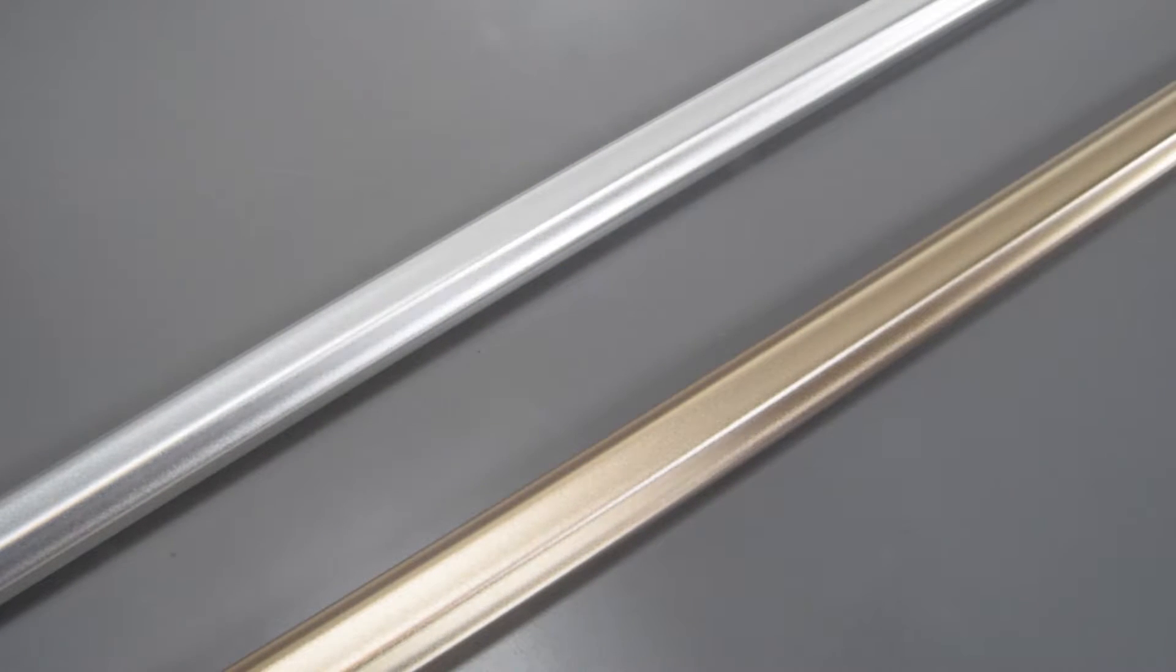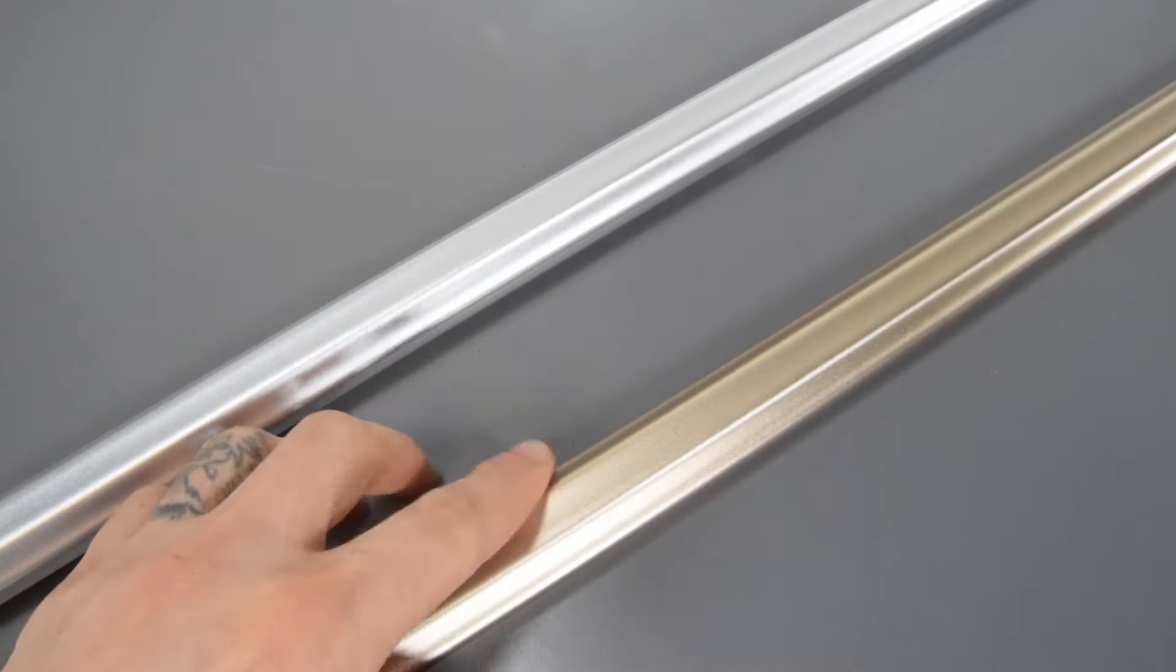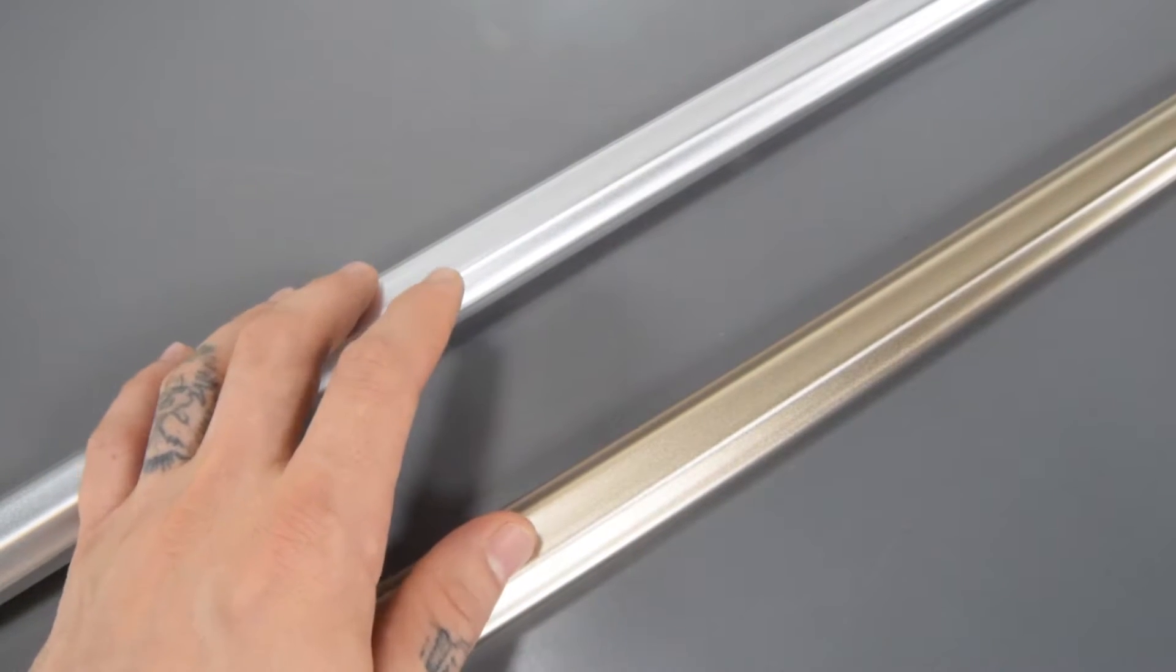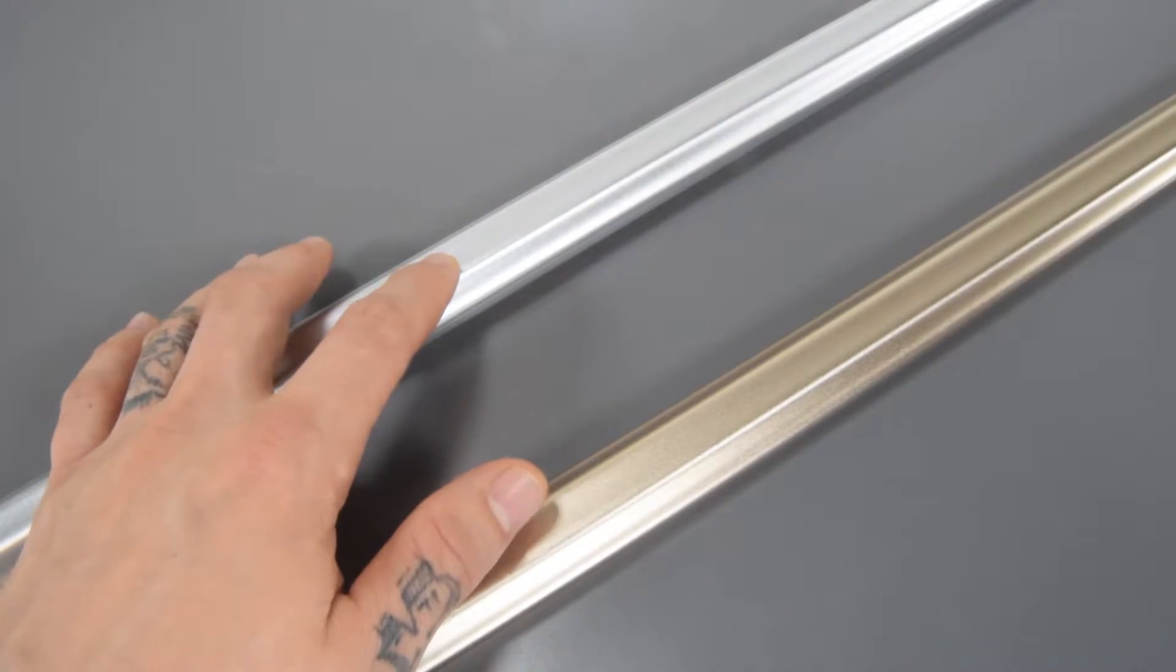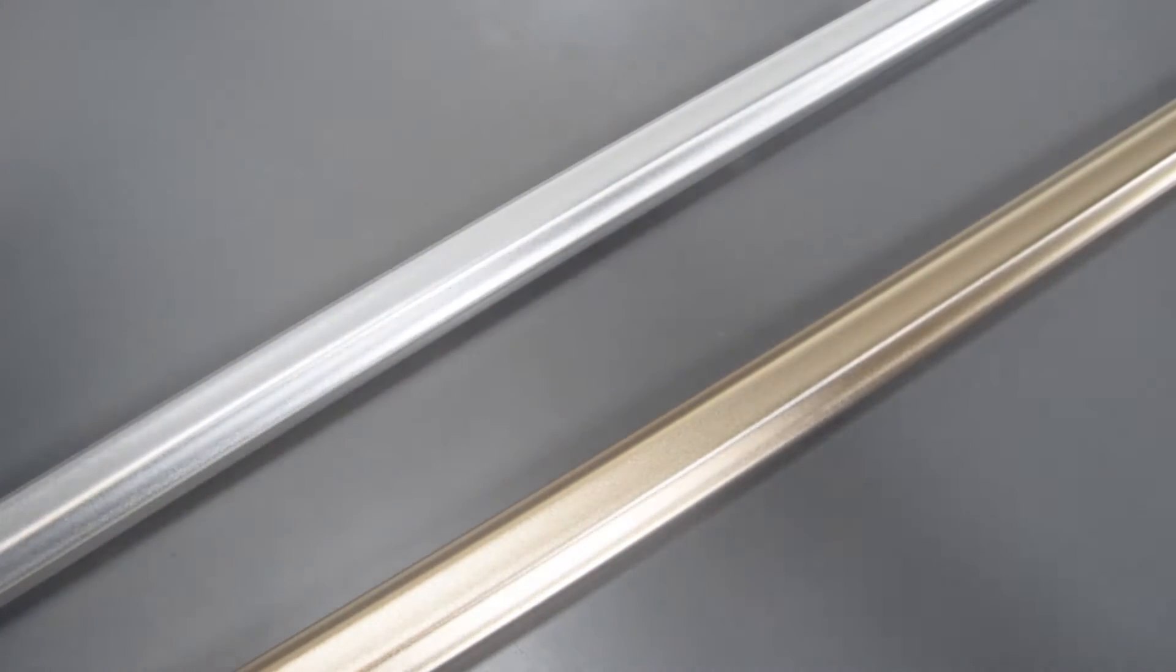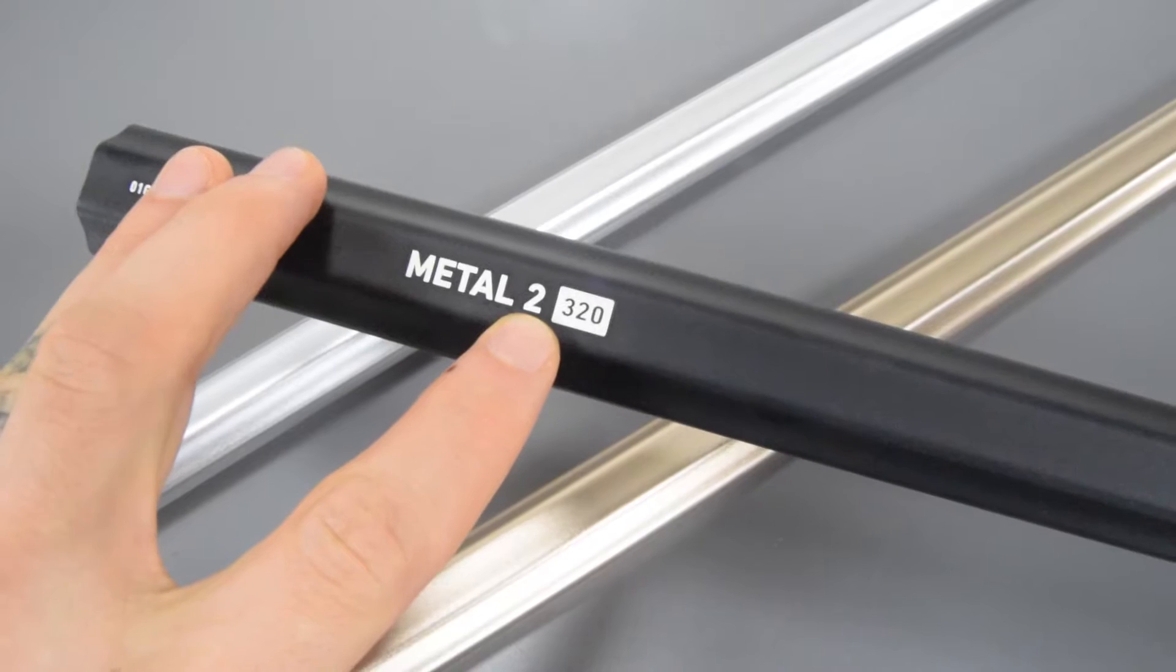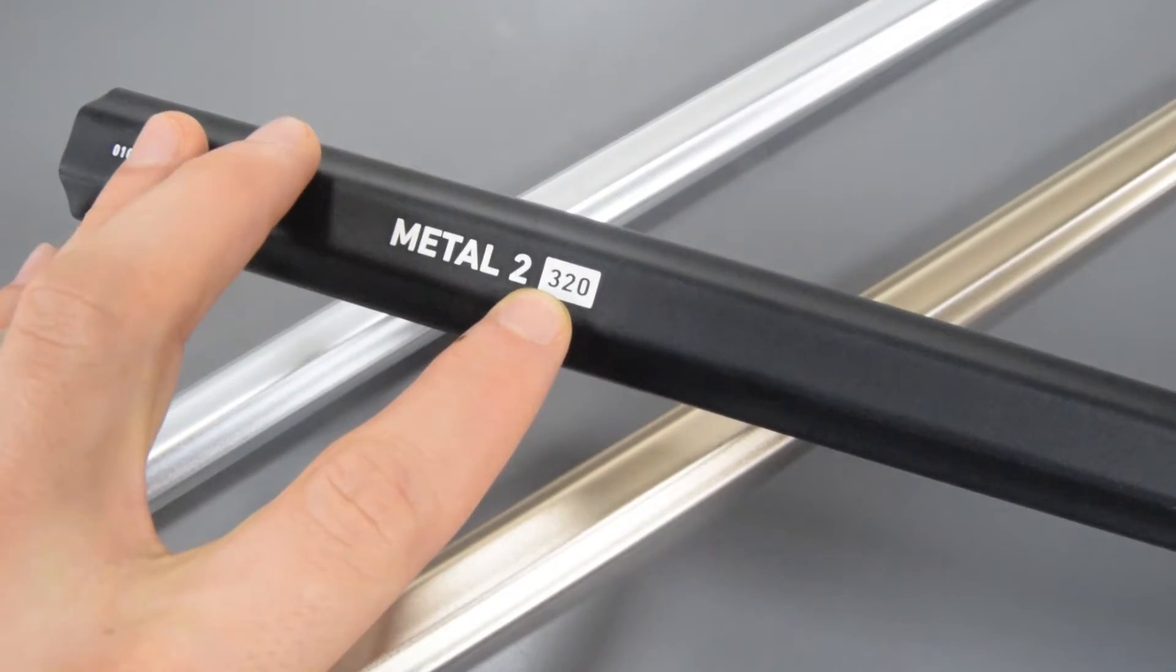Alright guys, so right here I have the StringKing Metal 2 Defense Lacrosse shafts, so I have the two here just so you can see. You get the option of silver nickel or the black as well. Again you get the three weight options: 320, 350, and 380, those are the gram weights of the shaft.